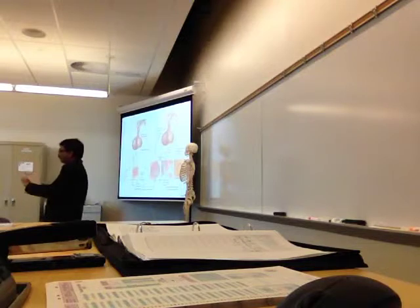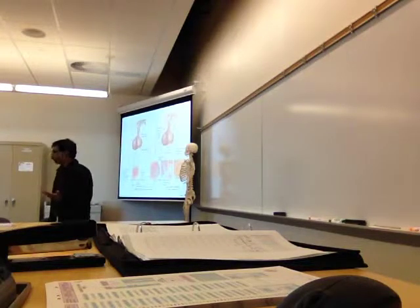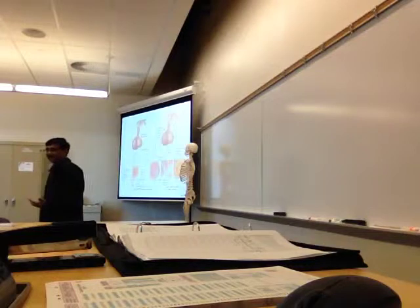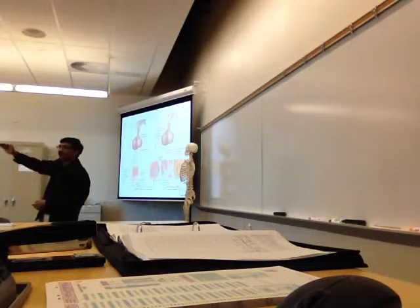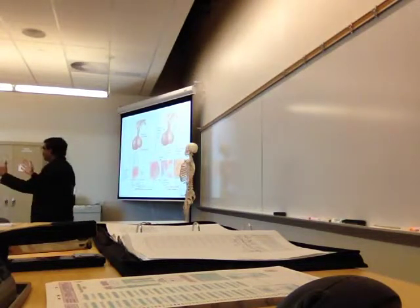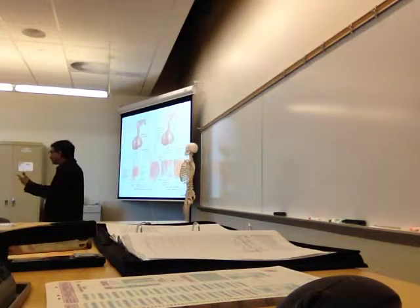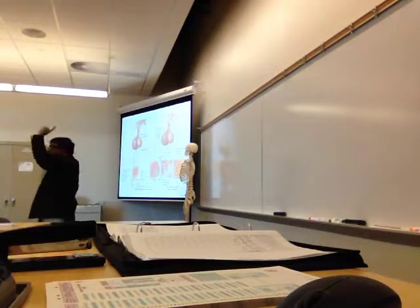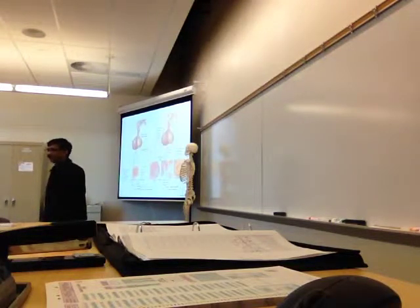If fertilization takes place, corpus luteum will be there for three to four months. We don't want ovulation during pregnancy, so corpus luteum keeps inhibiting the hypothalamus and pituitary for the first three to four months — not letting another egg mature and rupture. After three to four months, the placenta is already developed and it produces the same hormones, so no ovulation occurs until the end of pregnancy.